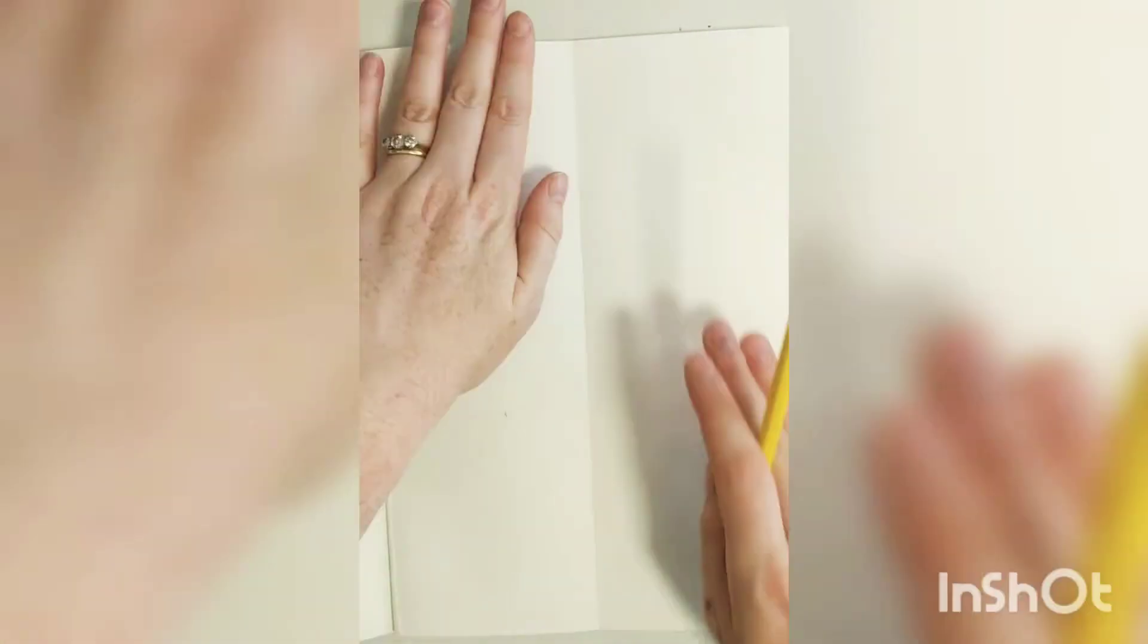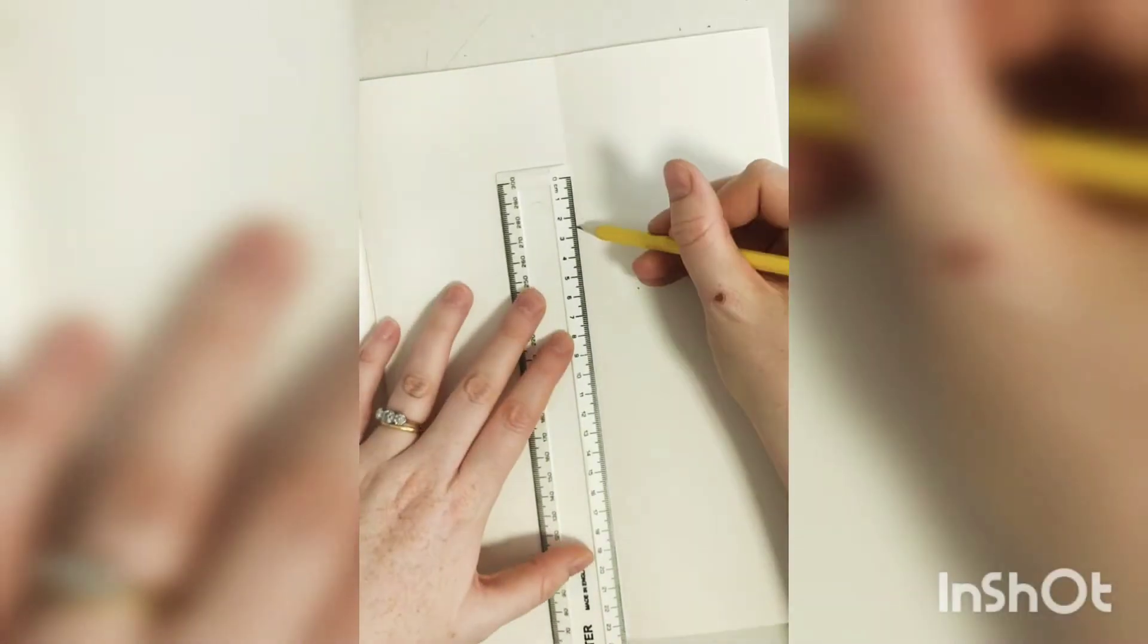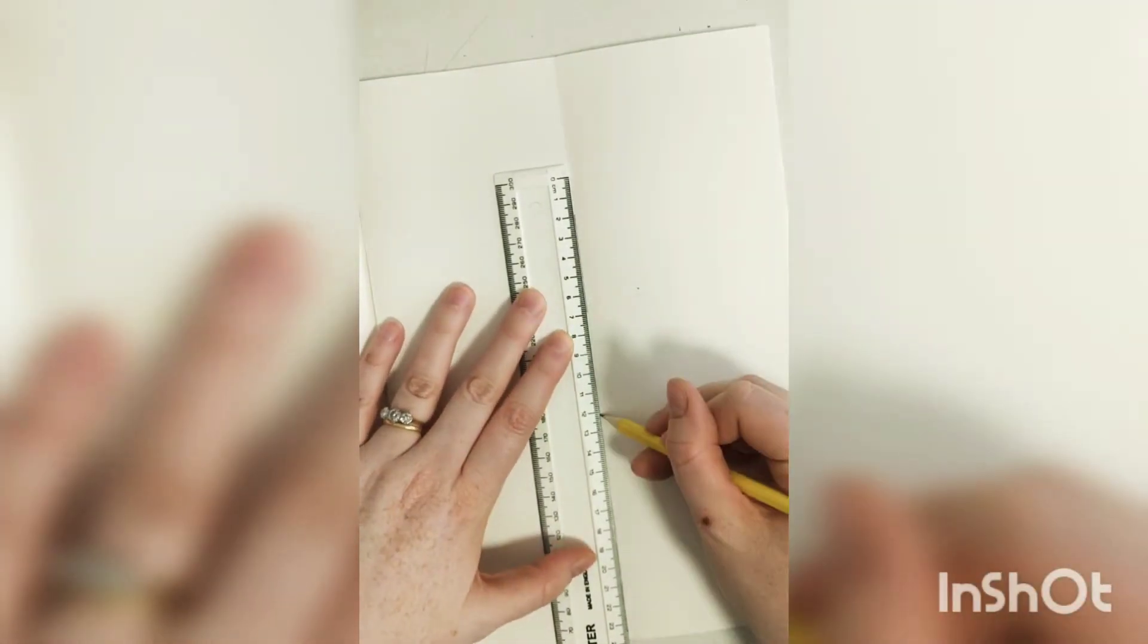The first thing I do is I fold my page in half so I know where the center is and I draw a really light line down the middle. Then I'm using my ruler just to mark out where my straight line is.